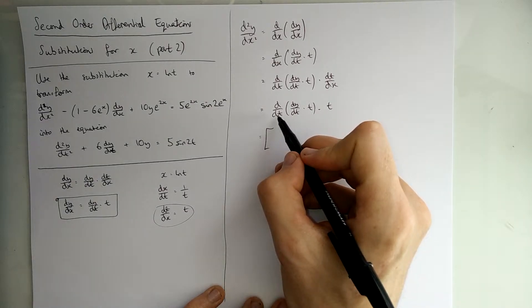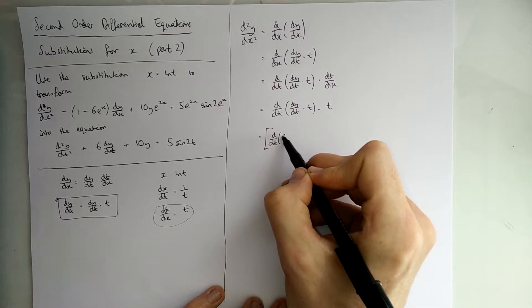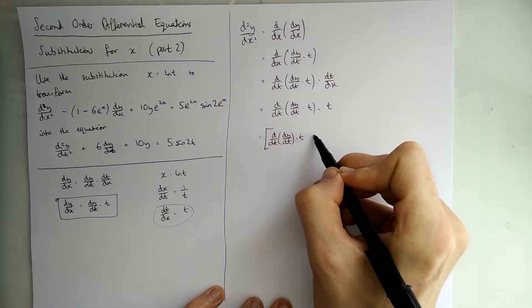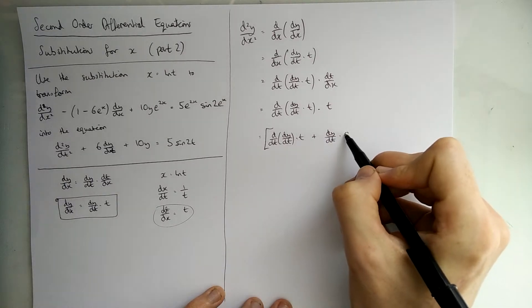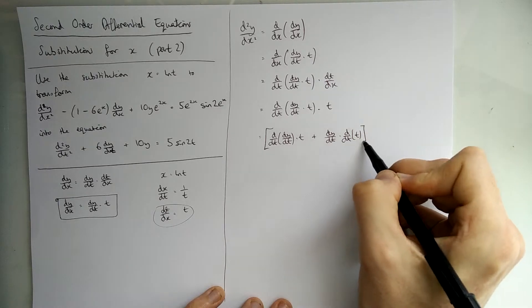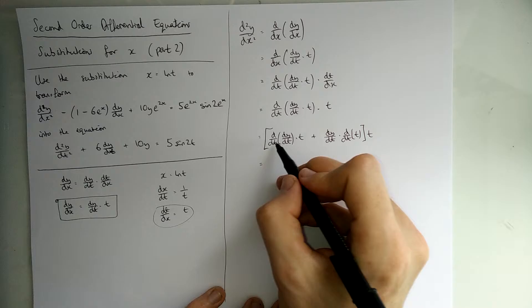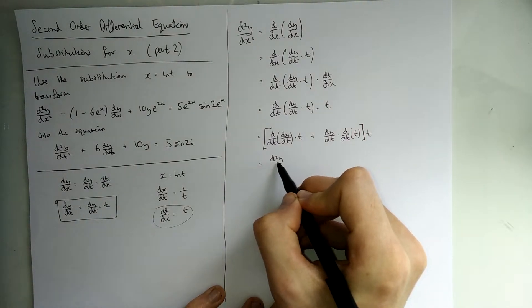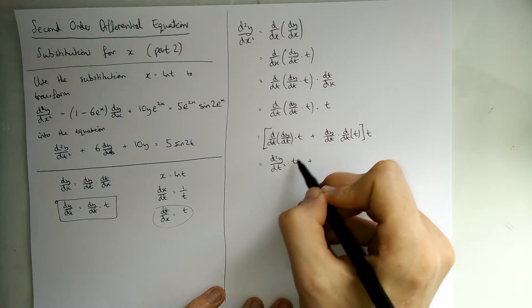So, we write this out formally. We're taking the first term. We're differentiating the first part and leaving the second bit alone. Then we're adding on the first one dy/dt left alone times by the differential of the second thing. This t is still there. Don't forget it. Now we can differentiate this. So, dy/dt differentiated is d²y/dt². We've differentiated it twice now. T is still there.